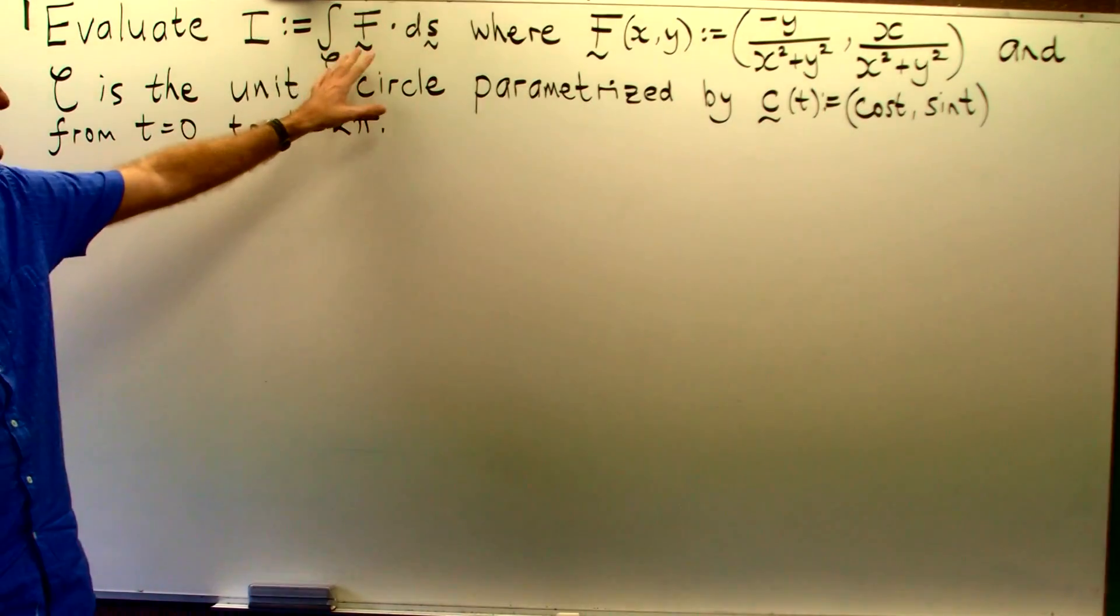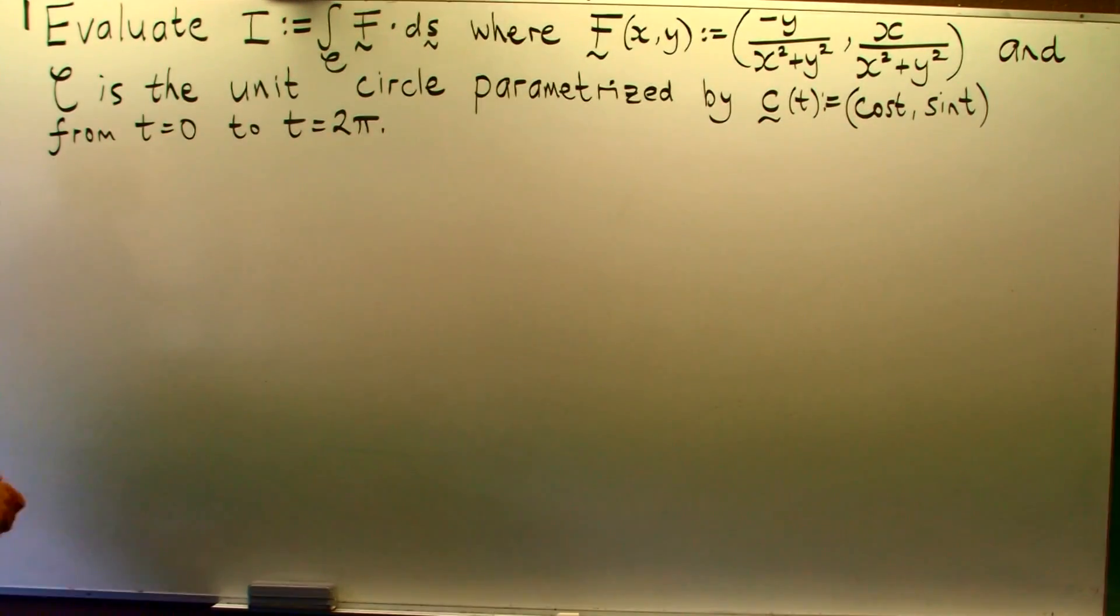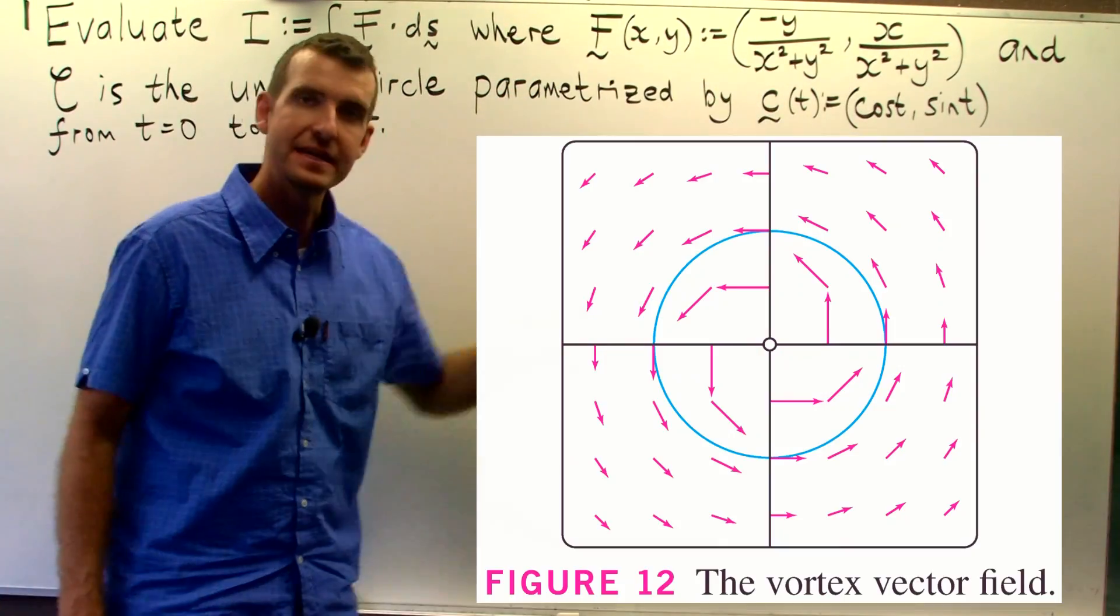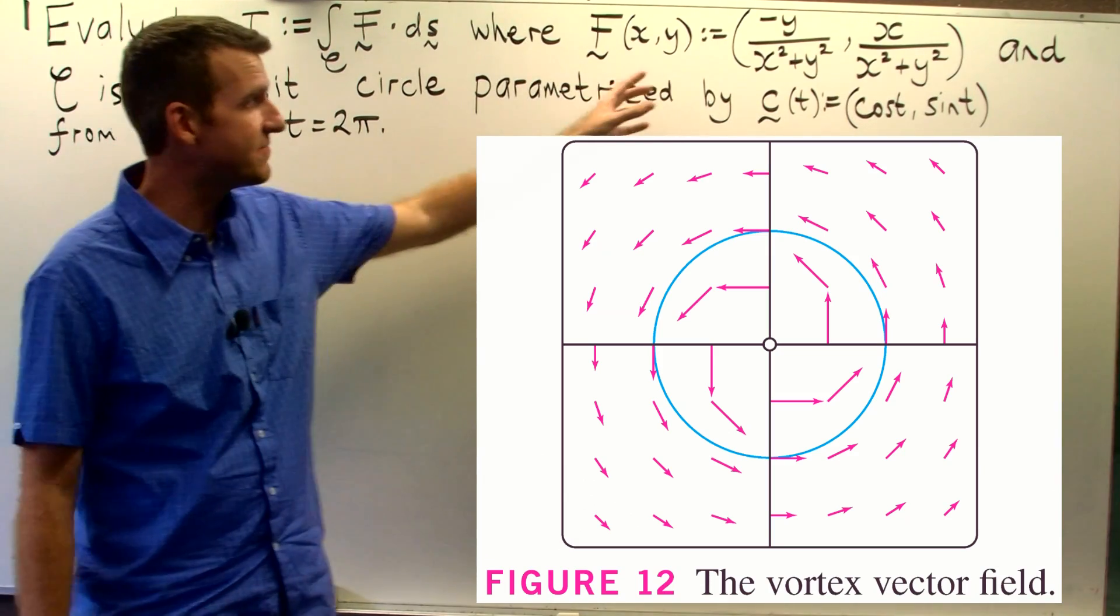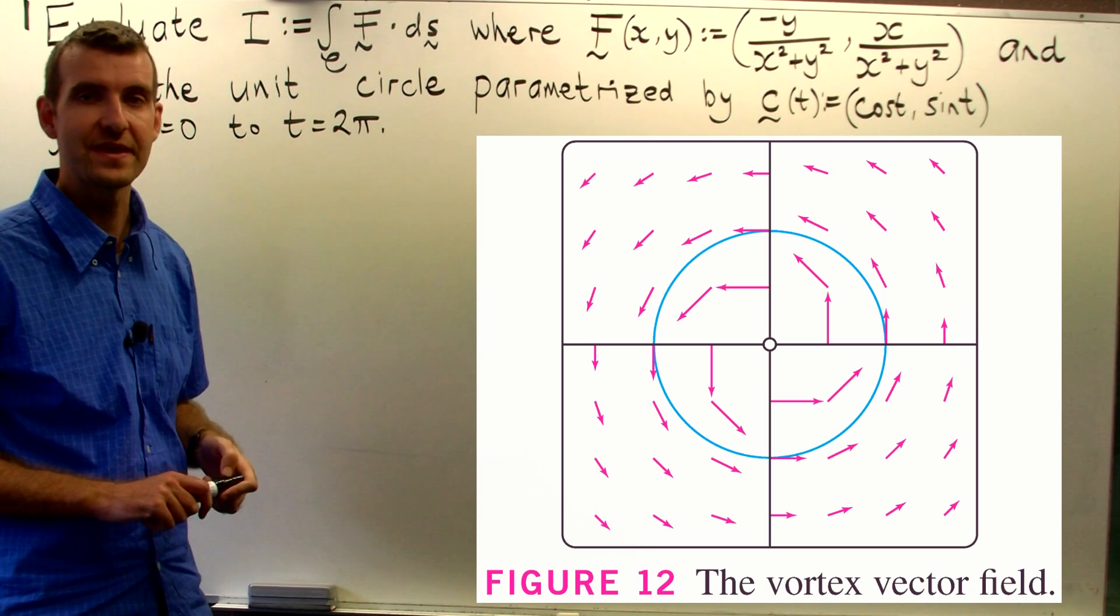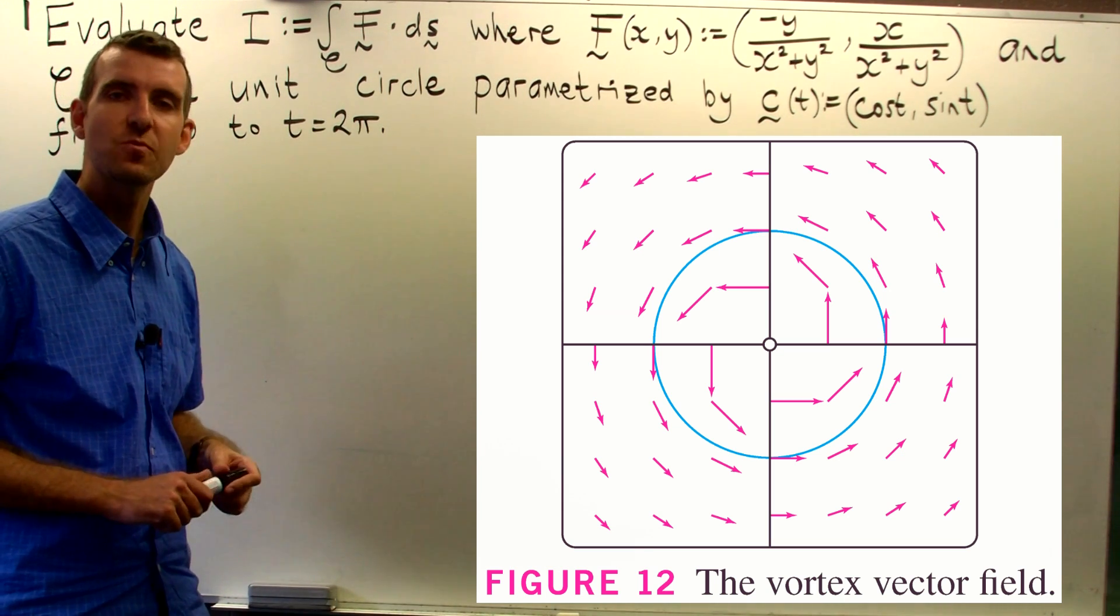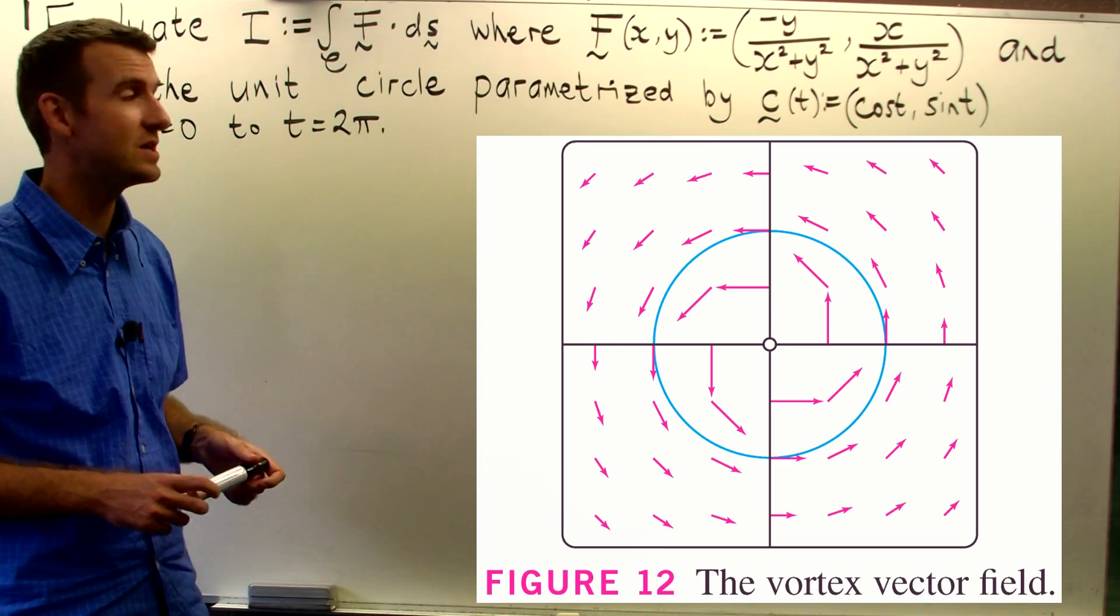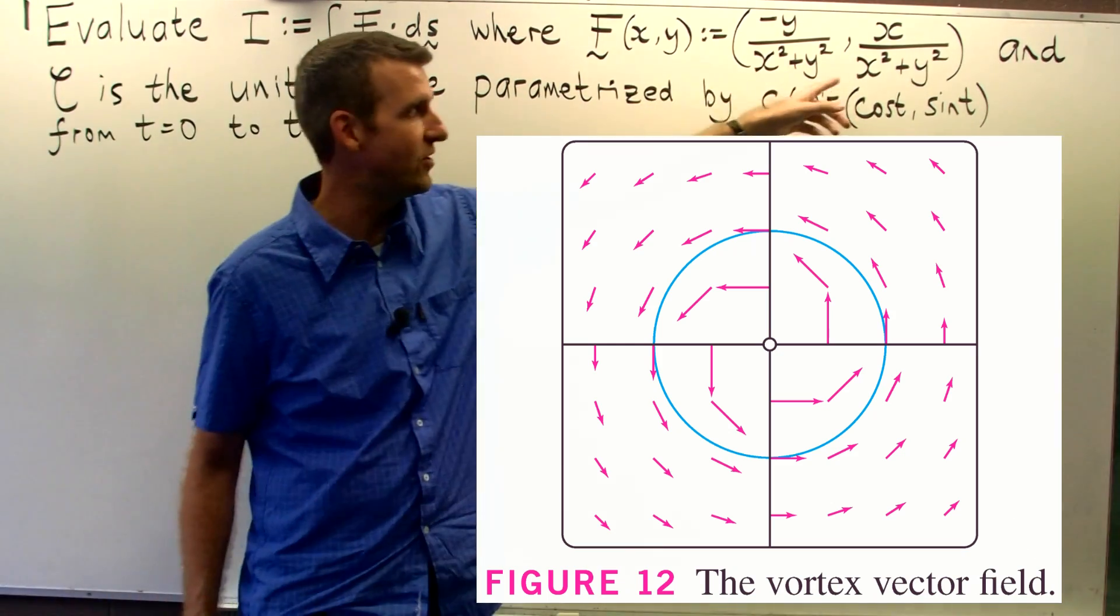So how do we evaluate this integral and what does it mean? Well before we get to that let's have a look at our vector field f. Now this particular vector field is known as a vortex field or a vortex vector field because it swirls around the origin in an anti-clockwise direction. Notice that it's not defined at the origin.